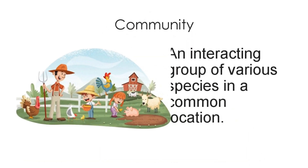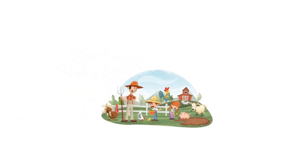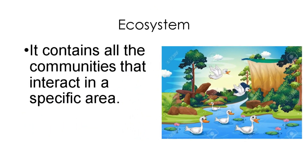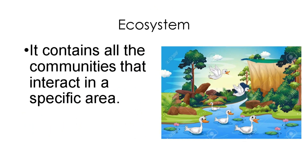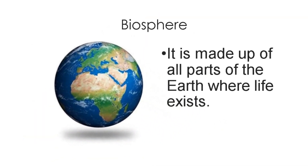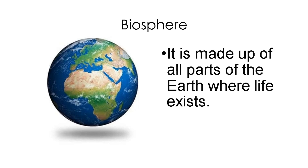Community is an interacting group of various species in a common location. Ecosystem contains all the communities that interact in a specific area. Biosphere is made up of all parts of earth where life exists.